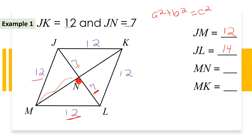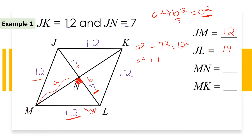12 is the hypotenuse because it is opposite the right angle, so that is c. Then a is MN (what we're looking for) and b is 7. Plugging into the Pythagorean theorem: MN squared plus 7 squared equals 12 squared. The legs are interchangeable as long as the hypotenuse is in the correct position.